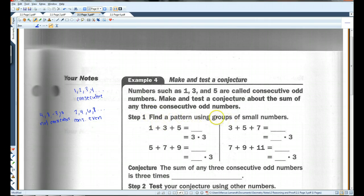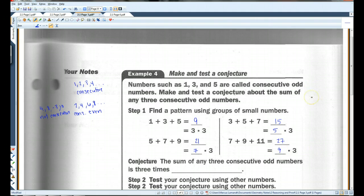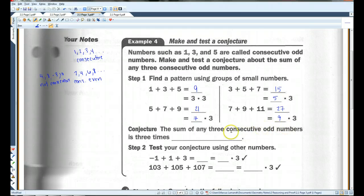Find a pattern using groups of small numbers. Let's see here. One plus three plus five, that's nine, which is the same as three times three. Five plus seven plus nine, that's 21, which is the same as seven times three. Three plus five plus seven, that's 15, which is five times three. Seven plus nine plus 11, 27, which is nine times three. So, it looks like the sum of any three consecutive odd numbers is three times the second number.